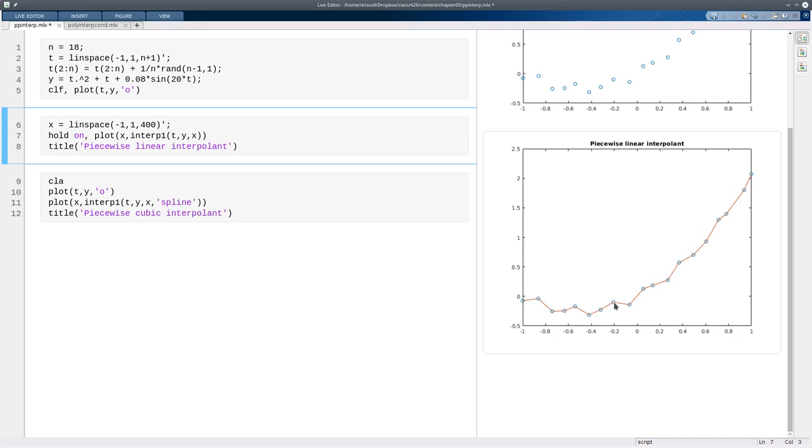As you can see, one of the features of this is that you get these corners every time there's a node, and that may be a problem for you, especially if you want to differentiate it. So there are many other alternative methods. One of those that's best known is called the cubic spline, and interp1 can give us that as well.